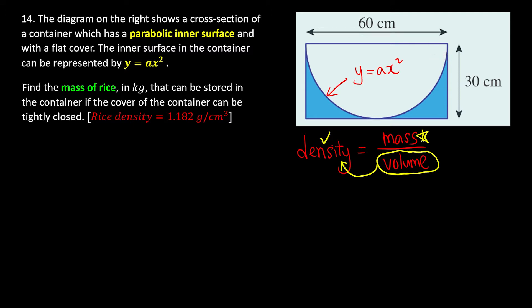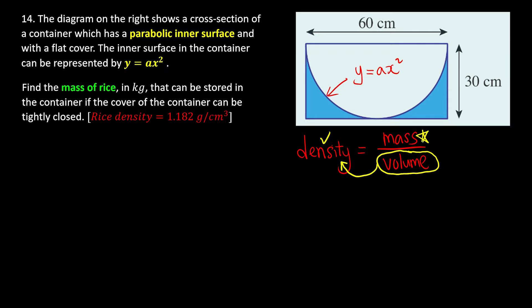The problem is that the equation given is incomplete — we have one unknown, which is 'a'. We can eliminate the unknown if we know at least one coordinate on the curve. Since no coordinate system is given, we can build our own, but first we need to know the basics of quadratic equations.